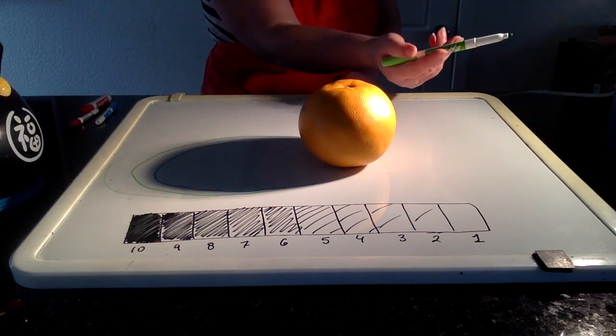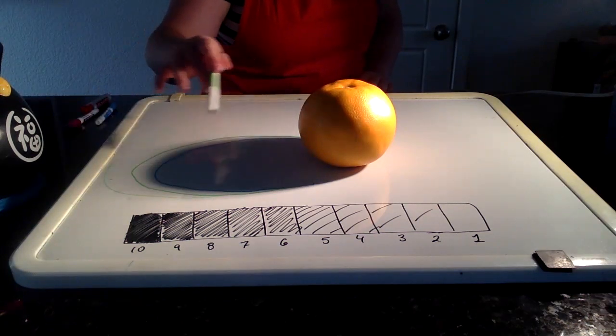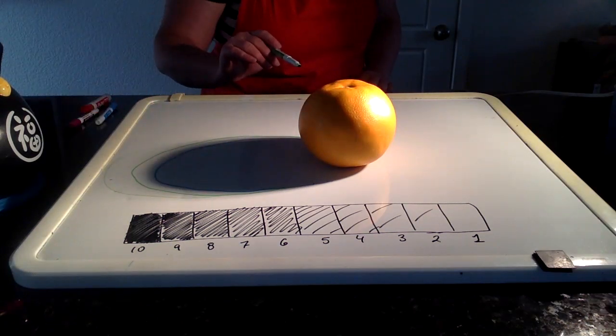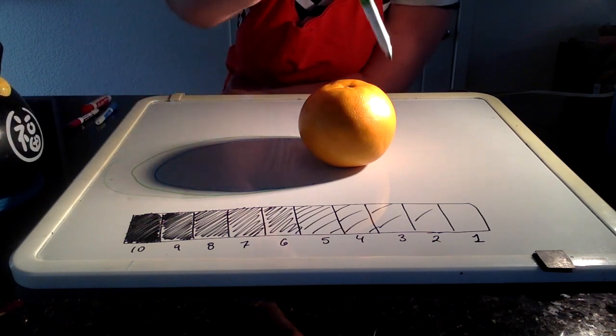So even though our light source is all the way over here, our shadow is extended, and as it extends, it starts to gradually get lighter. So now that we have our shadow here, let's talk about our orange.